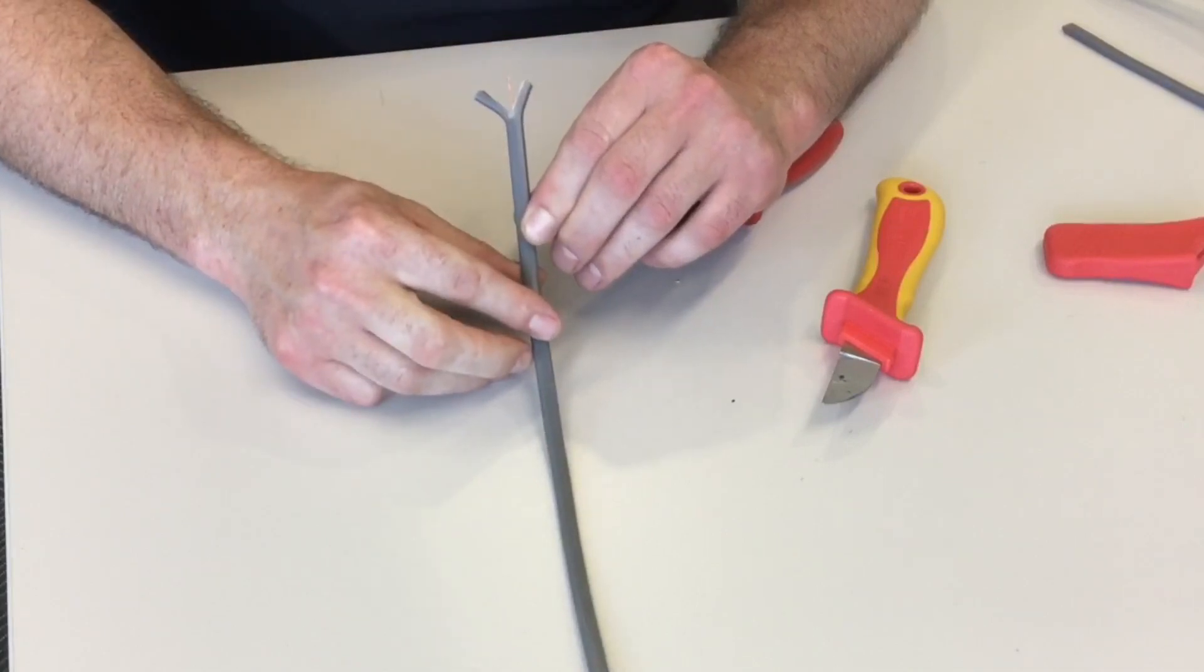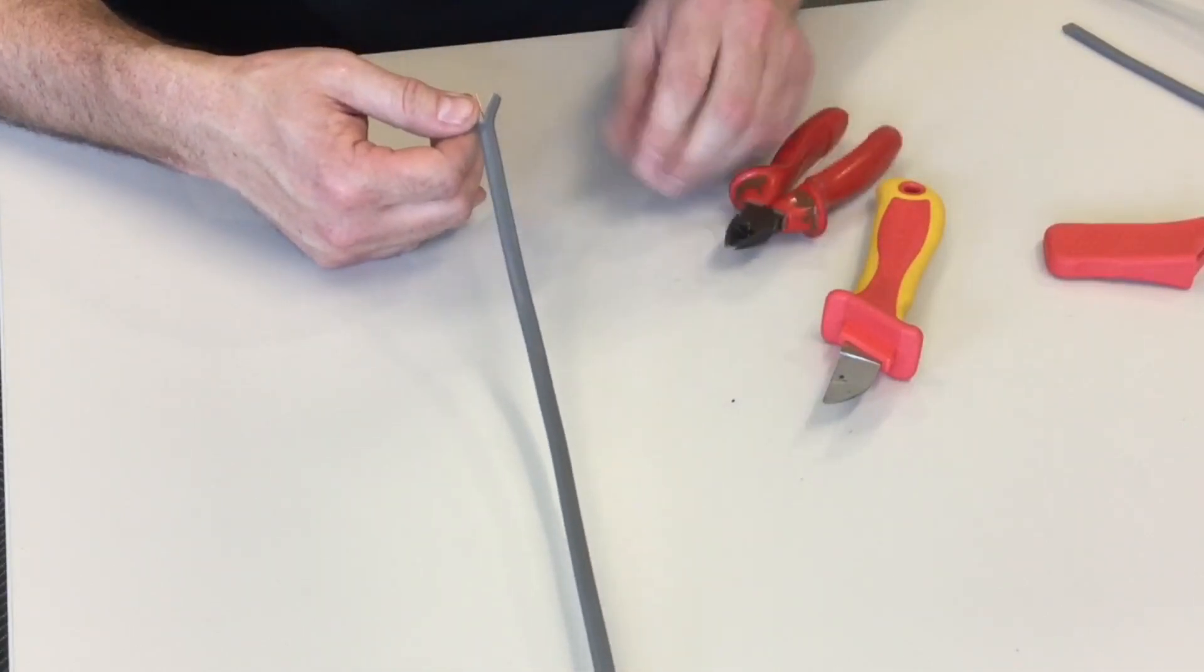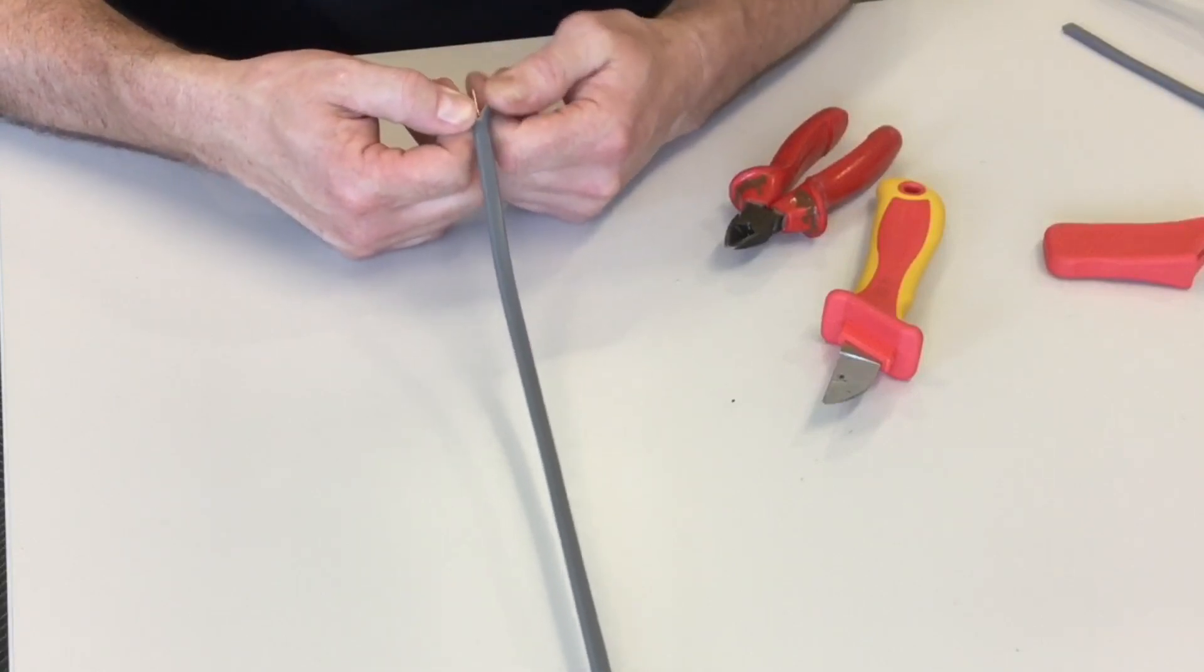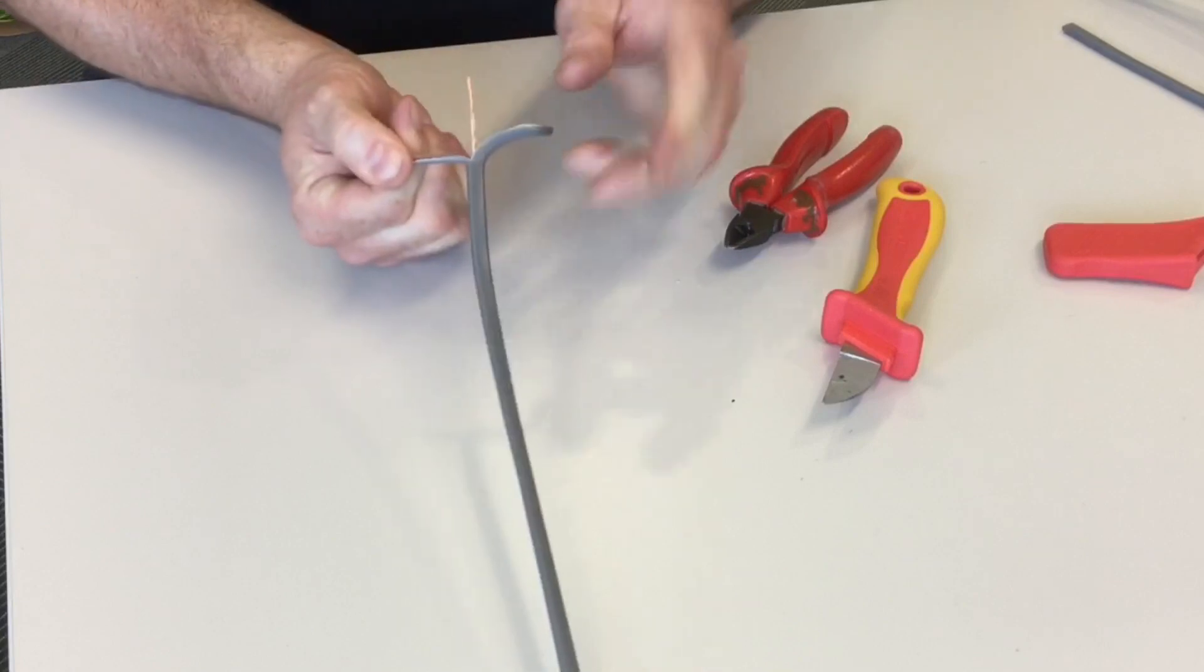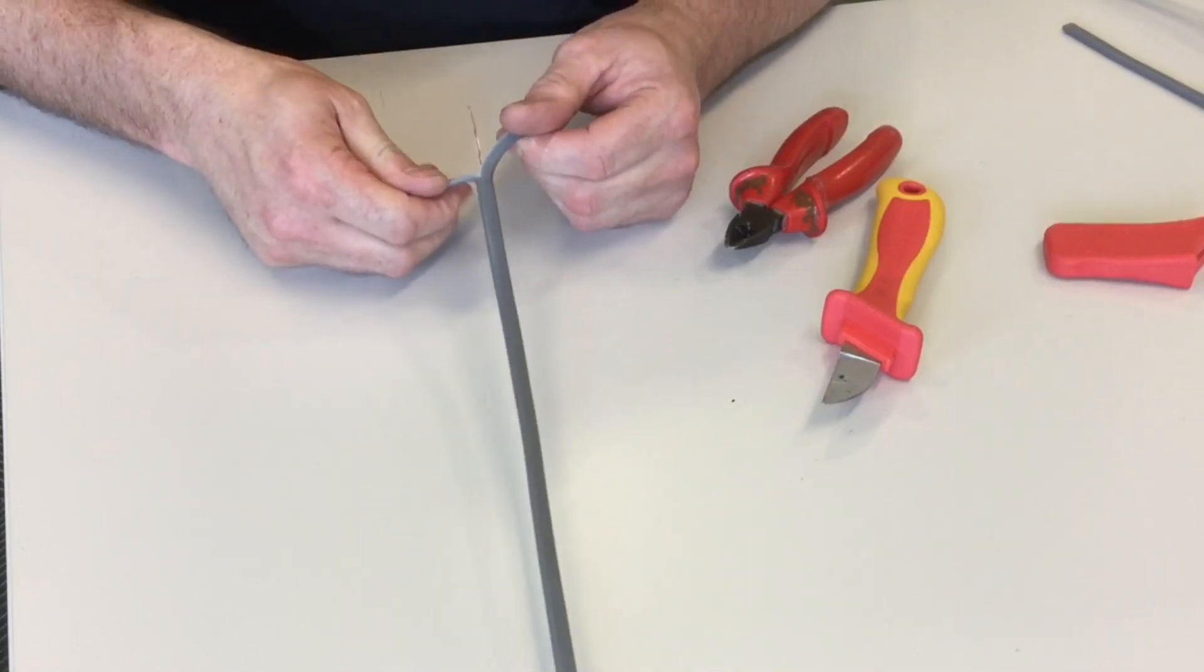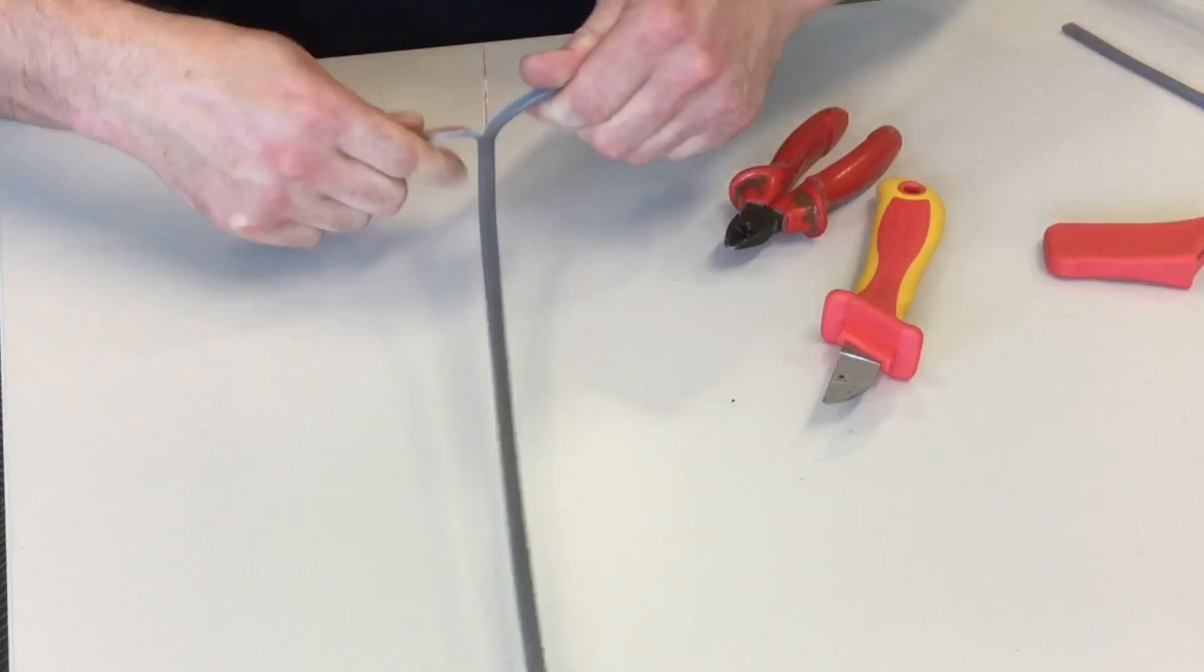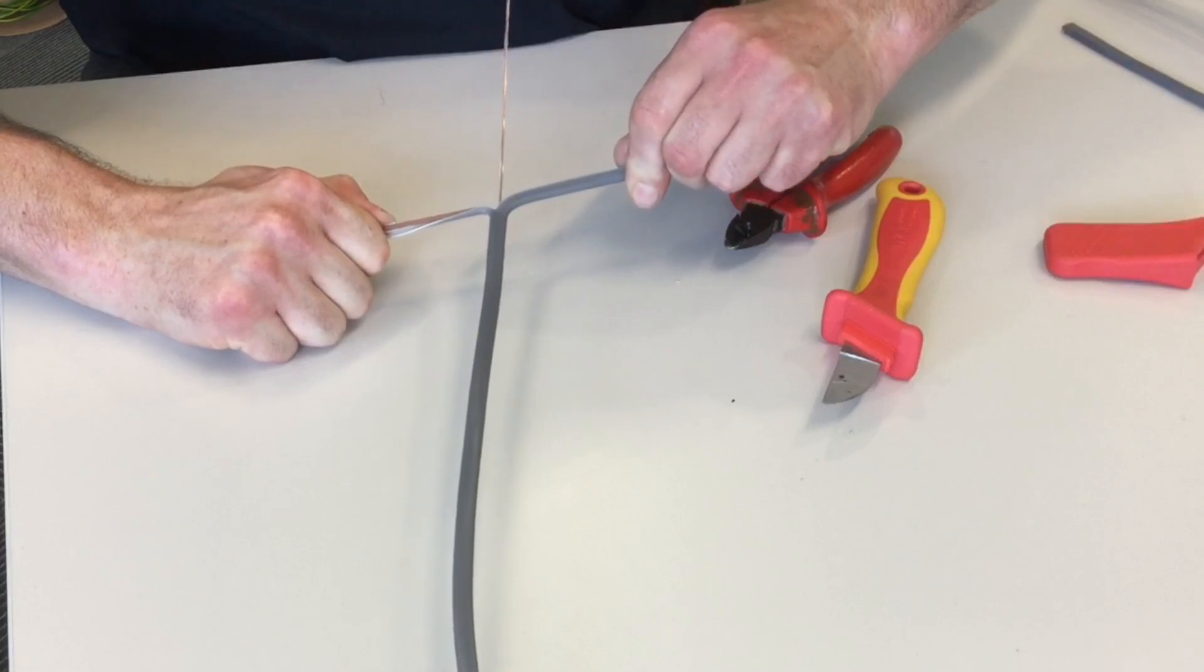And it means that I can just open it out and I can see a conductor in the center there which is bare and that is my circuit protective conductor. Next I take my hands and I put my knuckles together and I am just going to pull. So I am holding on to the two conductors, leaving the CPC in the center and just pulling the two conductors. The longer it gets the easier it will get to pull. And I am going to pull it down just short of the area which I have scored.